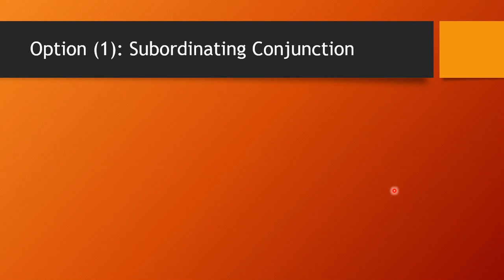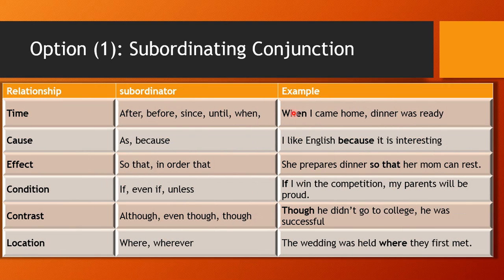Let's discuss the subordinating conjunctions in detail. For time: after, before, since, until, when — 'When I came home, dinner was ready' — I can switch to 'Dinner was ready when I came home.' For cause: as, because, since — 'I like English because it's interesting' — I can switch to 'Because English is interesting, I like it.' For purpose: so that, in order that — 'She prepares dinner so that her mom can rest' — here I cannot switch the two parts; 'so that' and 'in order that' always come in the middle.